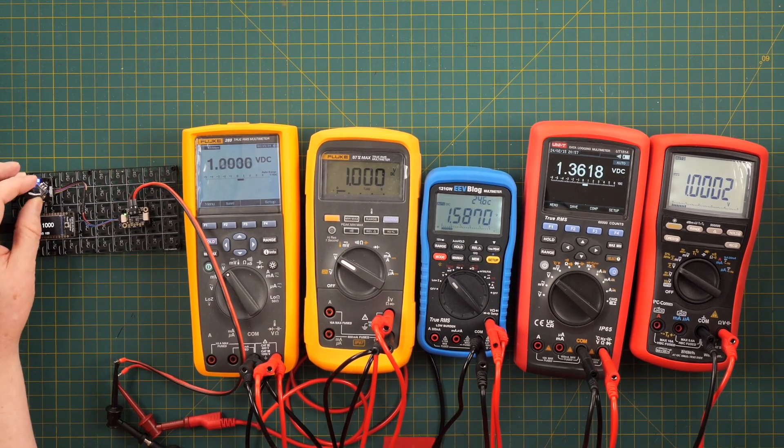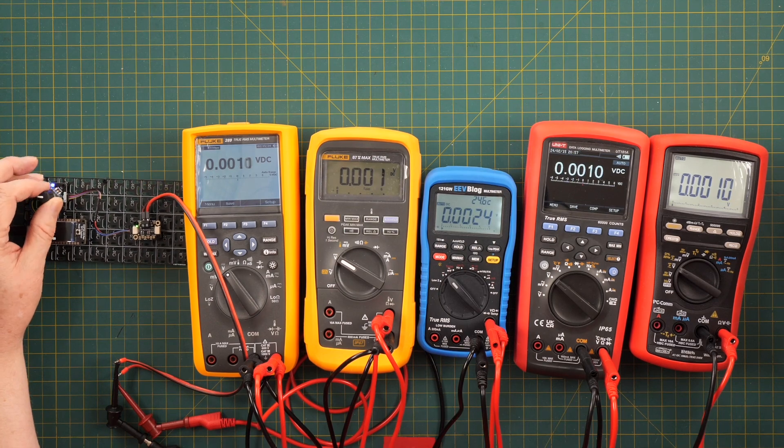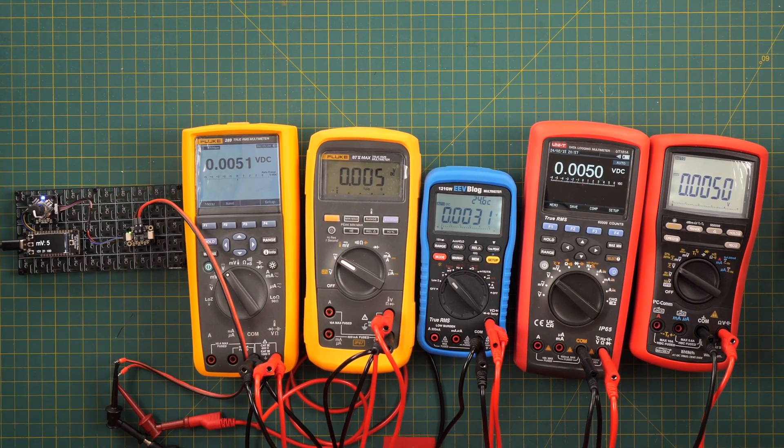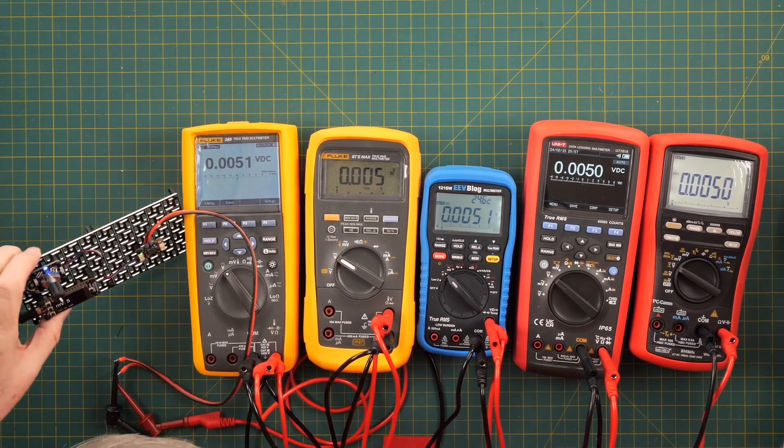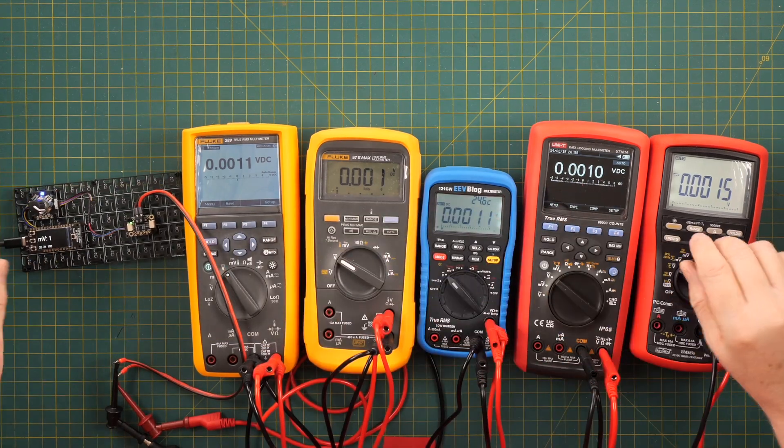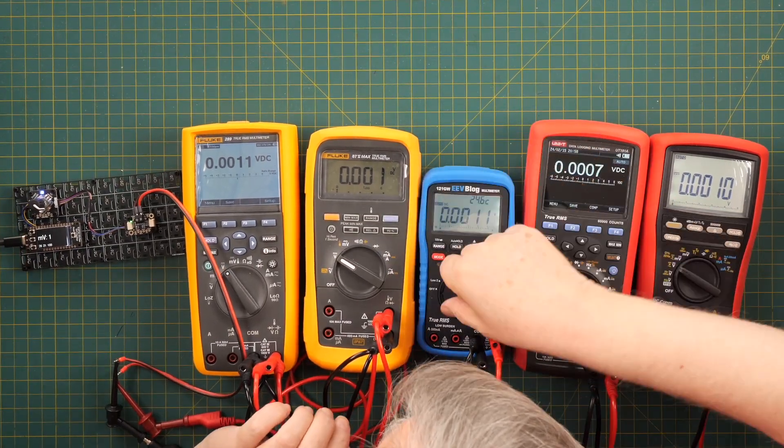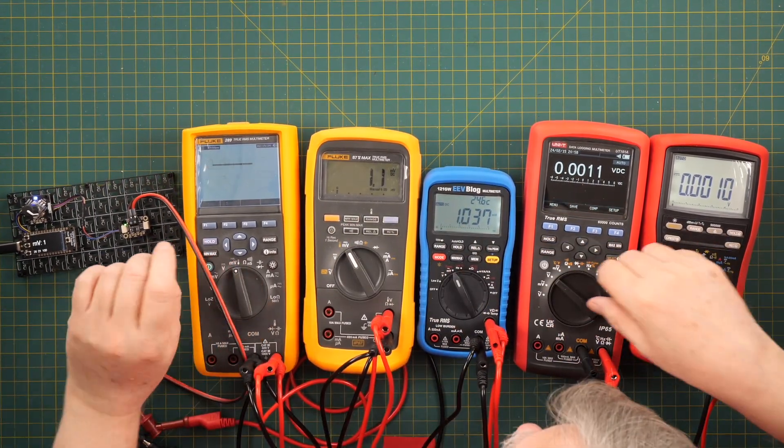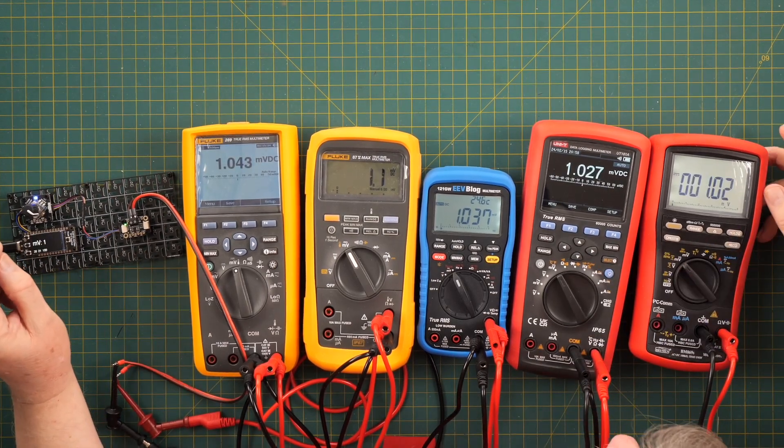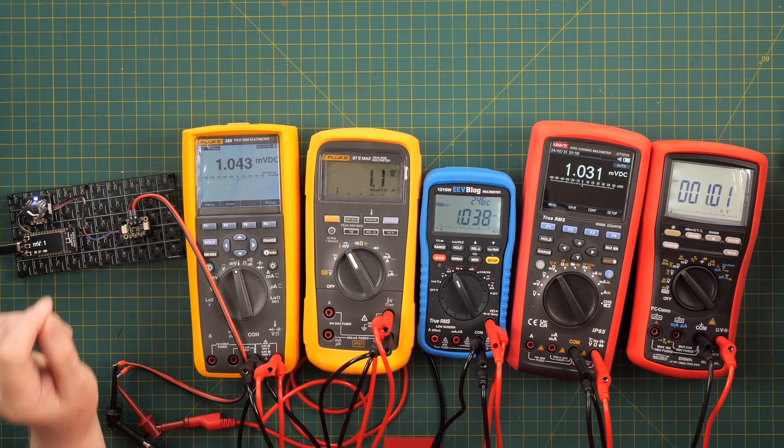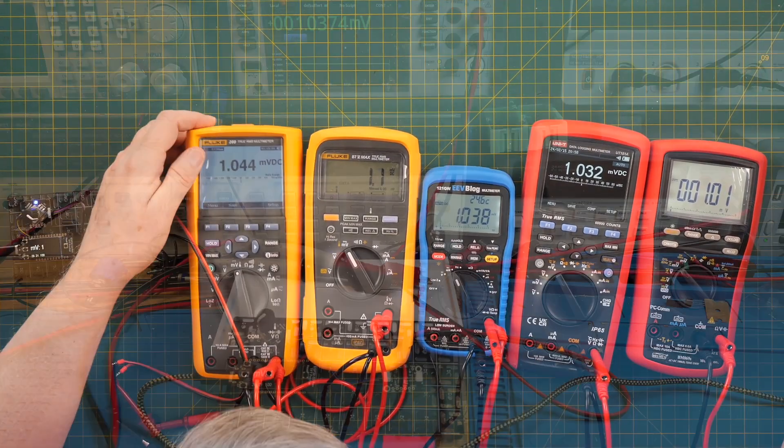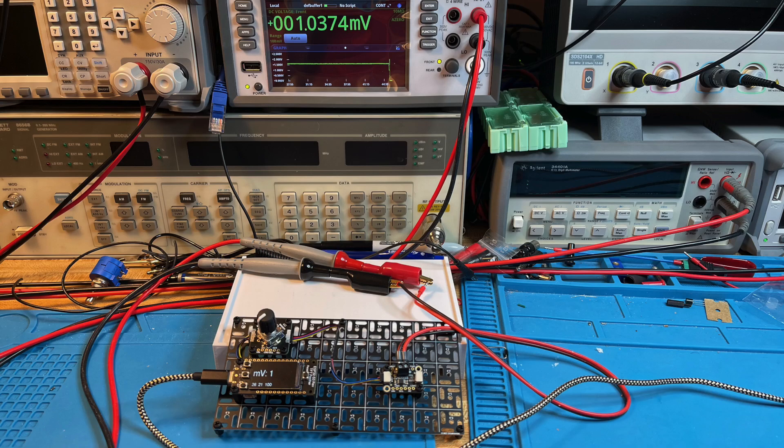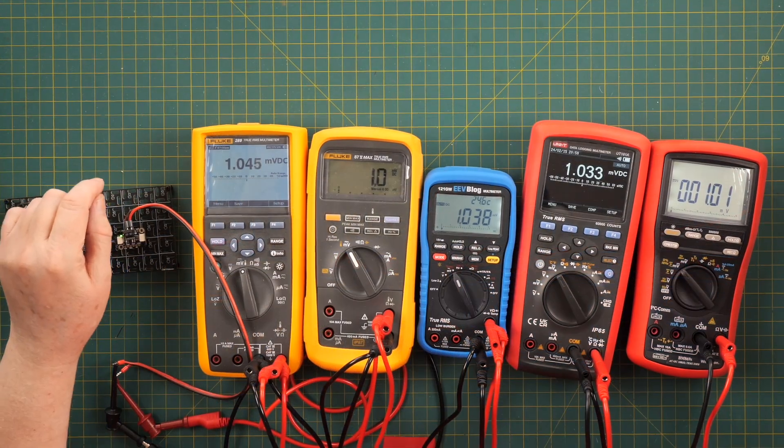We'll take it down to one millivolt, which is where the DAC has the most problem. So there's one. No, that says five. Let's go to one. This has to go to millivolts. You all got to go to millivolts. All right. Now this actually puts out 1.0 something on the Keithley.